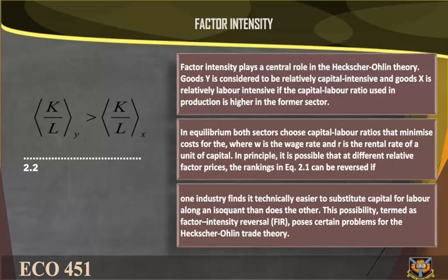In principle, it is possible that at different relative factor prices the rankings in equation 2.1 can be reversed, if one industry finds it technically easier to substitute capital for labor along an isoquant than does the other. This possibility, termed factor intensity reversal (FIR), poses certain problems for the Heckscher-Ohlin trade theory.